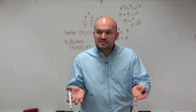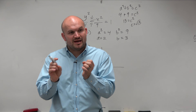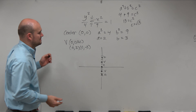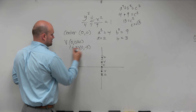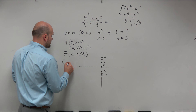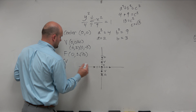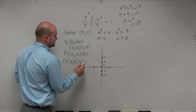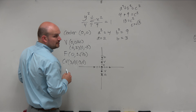The co-vertices are not really on the graph of the hyperbola, but I'm going to use the co-vertices to help show a way to graph our asymptotes. The co-vertices go left and right a distance of b, which in this case is 3. So the co-vertices are 3, 0 and negative 3, 0.